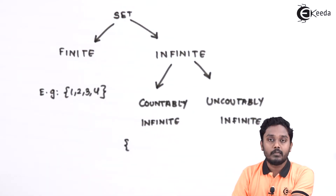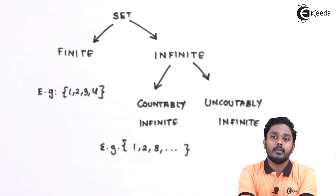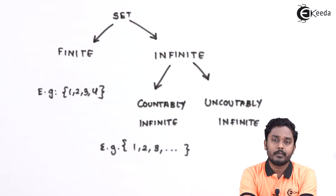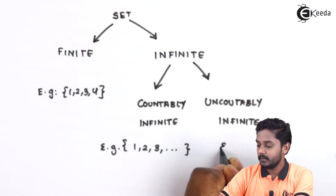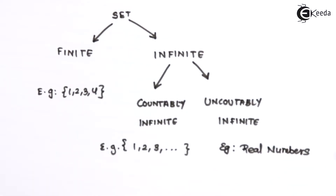For countably infinite sets, let us take an example of natural numbers. What about real numbers? Can we really identify the position of any real number in the set of all real numbers? No. Let us see how that works. Let us see the difference between the set of natural numbers and the set of real numbers.